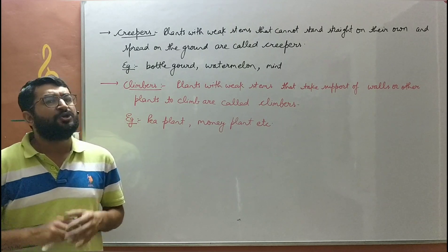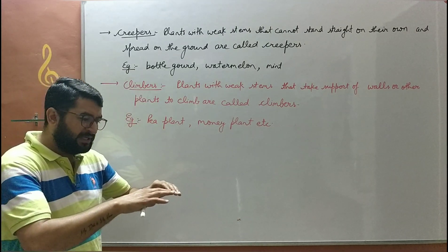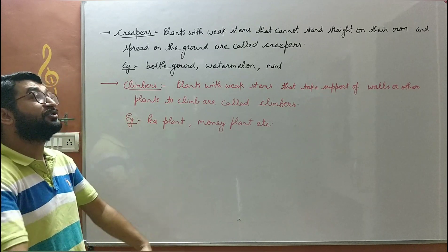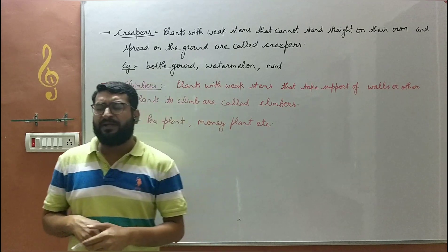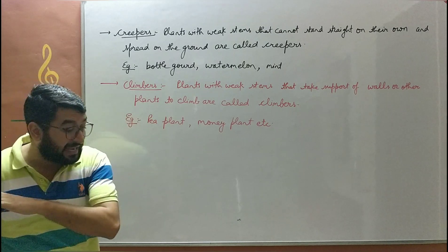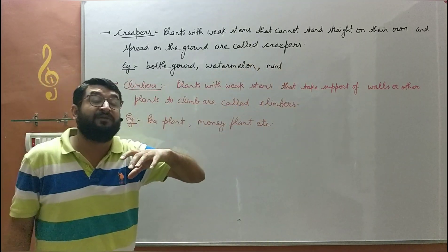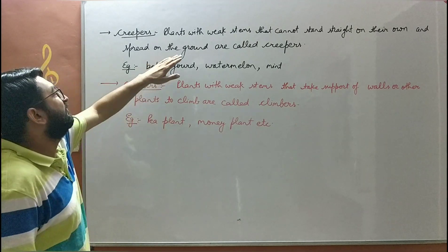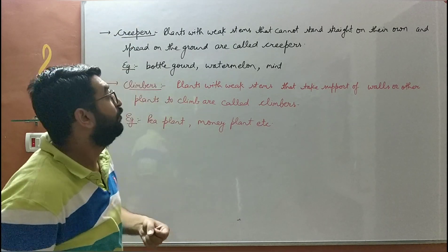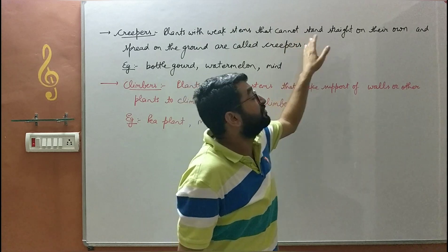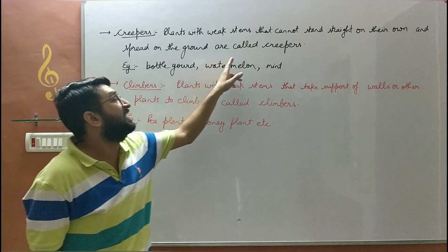There are also certain weak plants which crawl — they do not stand upright against gravity. Plants with weak stems that cannot stand straight on their own and spread on the ground are referred to as creepers.